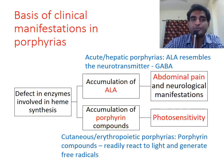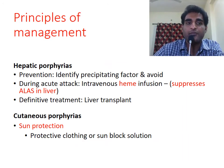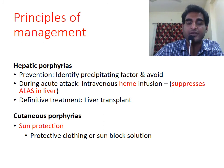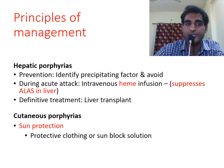Porphyrin compounds react to light and cause free radical-induced damage. Management of acute porphyrias is to identify the precipitating factor and avoid it. During an acute attack, intravenous heme infusion is used since it suppresses ALA expression in the liver. For cutaneous porphyrias, the major management strategy is protection from sun exposure.